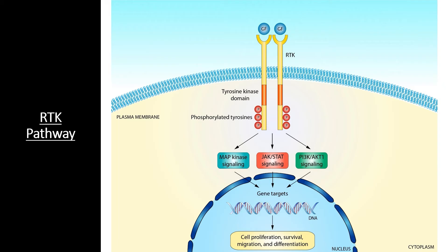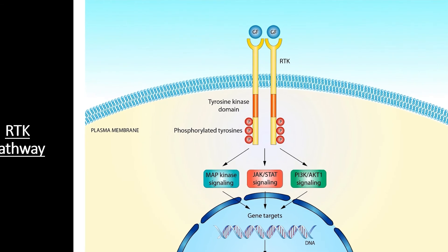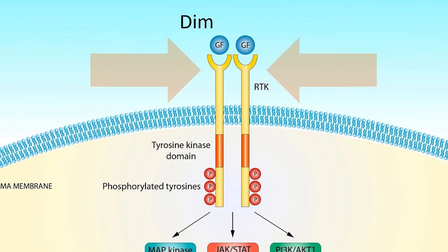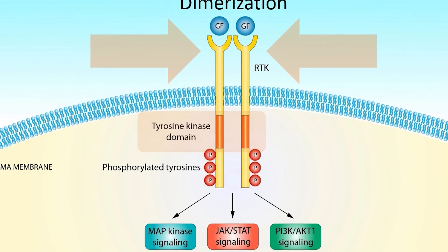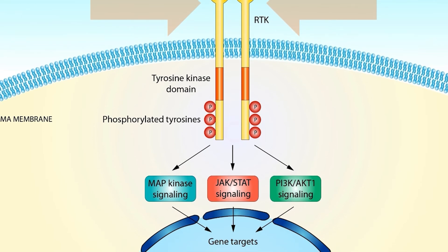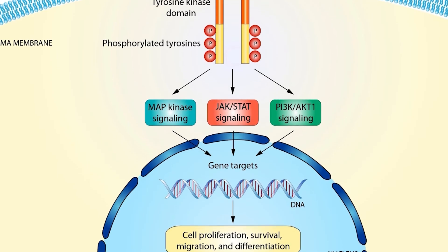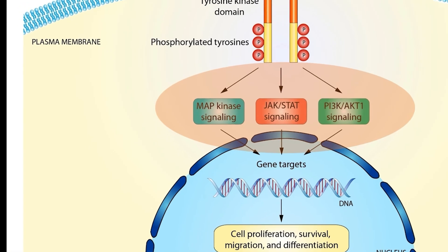Let's consider another common pathway: the RTK pathway, named for the receptor tyrosine kinase molecules that power it. Though there are dozens of different RTK proteins that respond to different growth factors and hormones, they all operate similarly. These RTK proteins typically sit individually on the cell membrane, but when a growth factor or signal molecule binds to their extracellular receptor domain, two RTK proteins come together in a process known as dimerization. The tyrosine kinase domain then phosphorylates tyrosine amino acids in the tail regions of each protein.